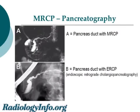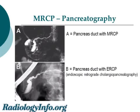Here are two example images of the same patient, which show an MRCP on top and a so-called ERCP at the bottom. The images look very similar. The big difference is that the top image was taken from the outside with an MR scanner, whereas the bottom image required a doctor to put a camera down the throat of the patient and take an x-ray.